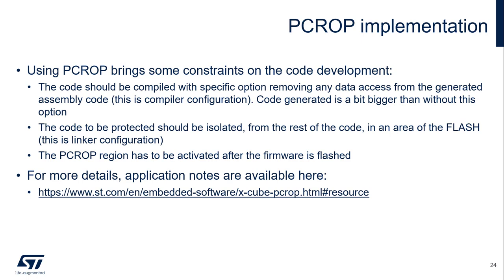Using PCROP brings some constraints on code development. The code should be compiled with a specific compiler option to remove any data access from the generated assembly code. This is a compiler configuration, and you can find additional compile options in the IDE. The code generated is slightly larger than without this option. The code to be protected should also be isolated from the rest of the code, placed in a standalone flash page or flash sector, since PCROP protection operates at the granularity of a flash page or sector. This needs to be managed in the linker configuration.